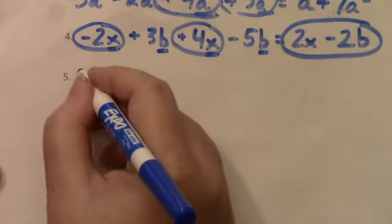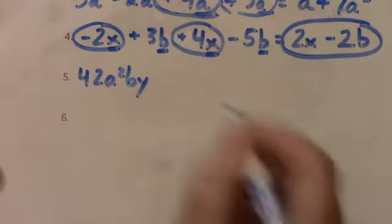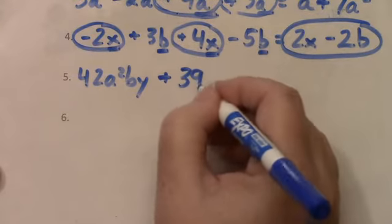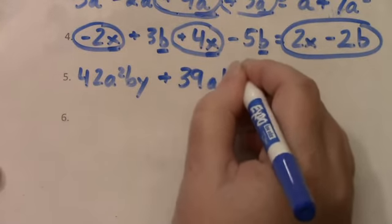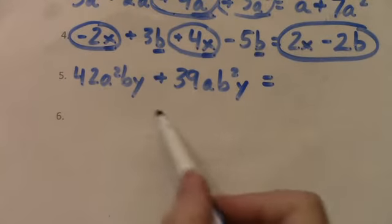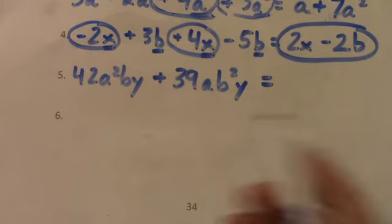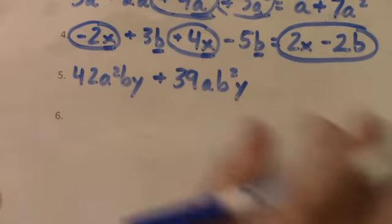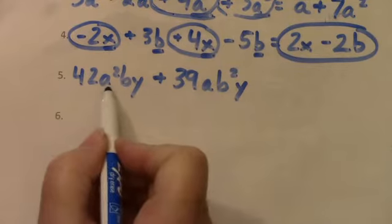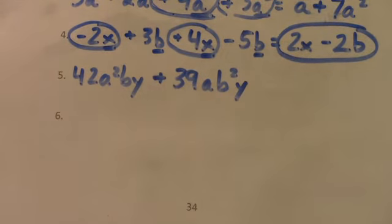Oh, 42a squared by plus 39ab squared y equals what? These aren't the same. I can't do it. It's nothing. It's the same. There you go. Very similar, but this is where we have to pay attention. What's being squared is the a, but what's being squared in this one is the b. So that one, we can't do anything with it.